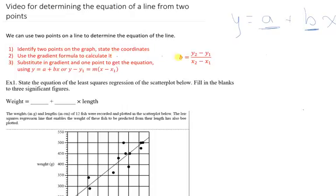Once you've got those two coordinates, you're going to start by figuring out the gradient using the formula y2 minus y1 over x2 minus x1. Remember, that's really just the rise over the run.